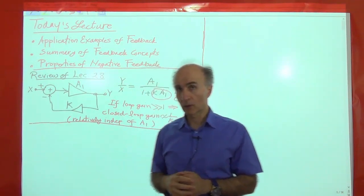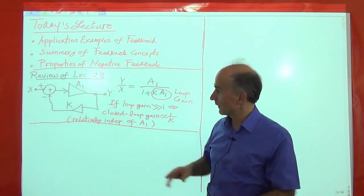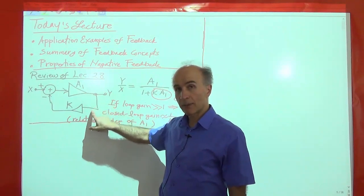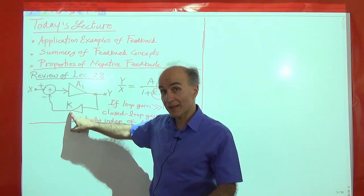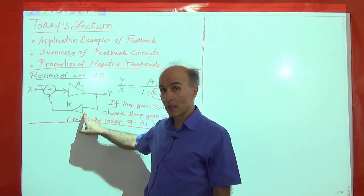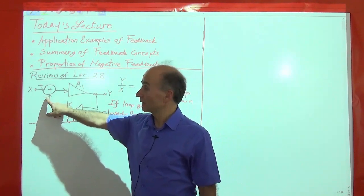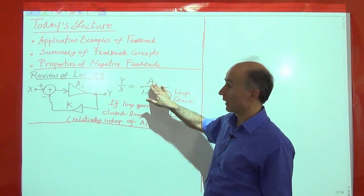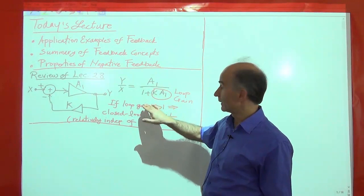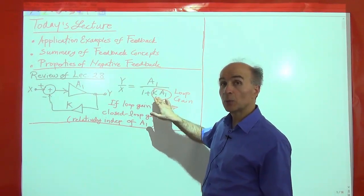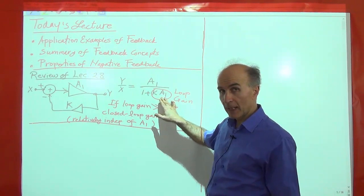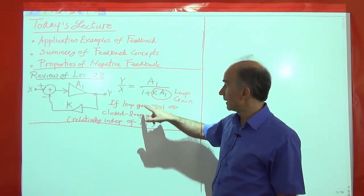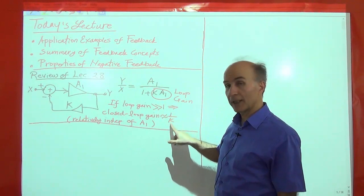Before we go further, let's look at what we covered last time. We saw that this is our standard negative feedback system, where we sense the output, pass it through a feedback network with some k, which is usually less than 1. We simply attenuate this by a factor of k, and then we subtract the result from x. What we saw was that the closed-loop transfer function is given by the open-loop gain divided by 1 plus the loop gain. k times A1 is called the loop gain. The key point was that if the loop gain is much greater than 1, then the closed-loop gain simplifies to 1 over k.